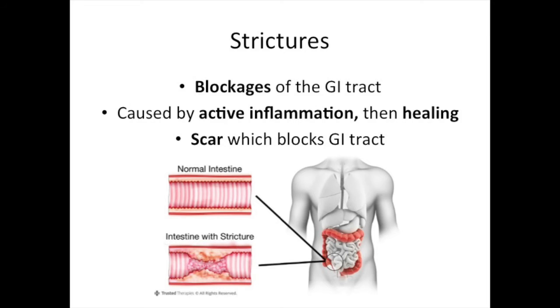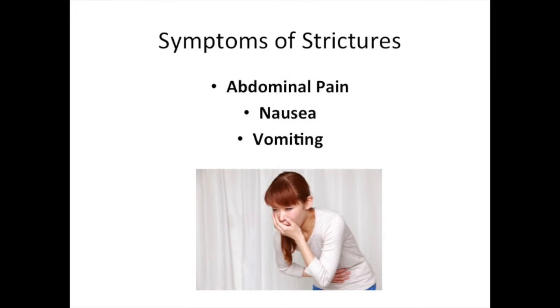First, let's talk about strictures. Strictures are blockages of the GI tract. Strictures occur when there's active inflammation and then healing. The healing leaves a scar which can block the GI tract.